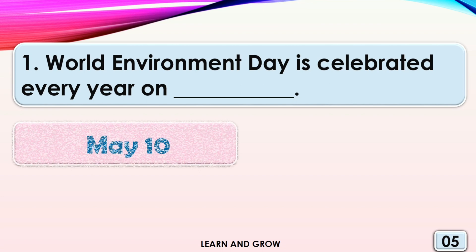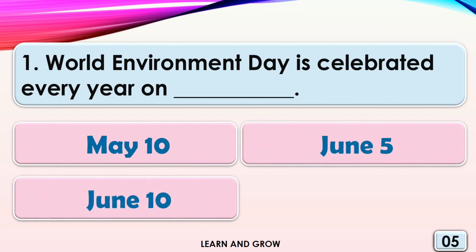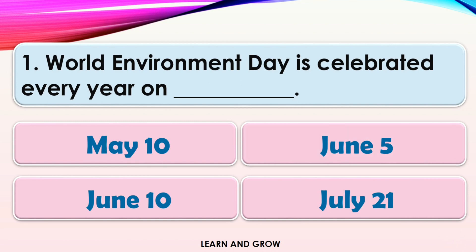World Environment Day is celebrated every year on: option A, May 10; option B, June 5; option C, June 10; or option D, July 21st.